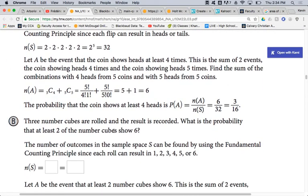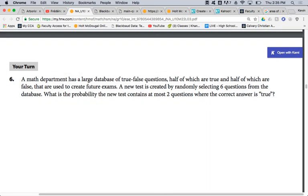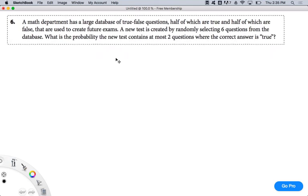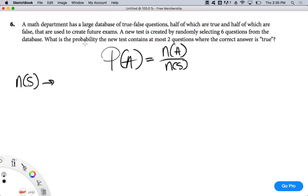Let's see if we can come up with another example of this. Here's a good one. A math department has a large database of true-false questions, half of which are true and half of which are false, that are used to create future exams. A new test is created by randomly selecting six questions from the database. What's the probability the new test contains at most two questions where the answer is true? Let's break this problem down. PA equals NA over NS. NS. What's NS in this case? We've got true-false questions. So it's kind of like flipping a coin. So it's two, but how many questions am I choosing? Two to the sixth, which is 64. Two, four, eight, sixteen, thirty-two, sixty-four.